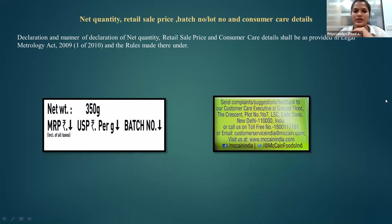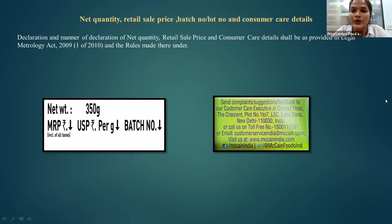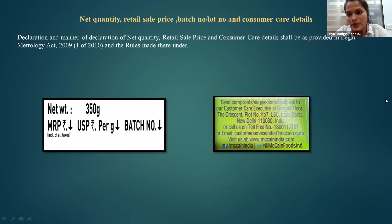Why is the batch number a mandatory thing? There are some products which need to be recalled if the products are faulty or if there is some kind of problem. With the help of the batch number, you can actually trace your product and recall it. Consumer care details are also mandatory — their significance is that you can always lodge a complaint if you find that a product is faulty or not suitable for you.